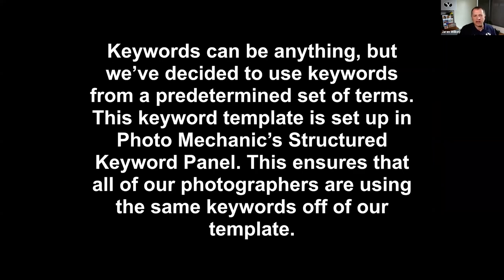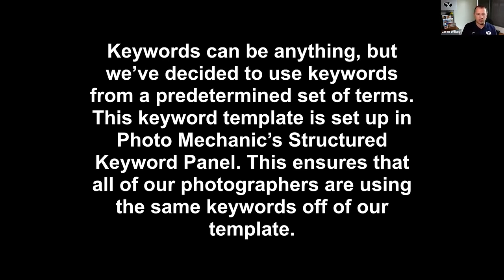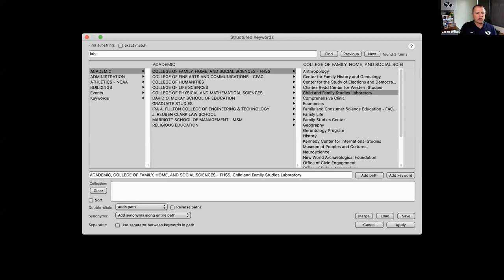Next comes keywording. Keywords can be anything, but we use keywords from a predetermined set of terms. We have two staff photographers and six student photographers — if we were all just coming up with our own keywords, they would never match up and it'd be chaotic. I got help from Ken Bennett at Wake Forest; he gave me his structured keyword panel and taught me how to use it. We've been using it for a couple of years and it's been a big deal. Ken has agreed to do a webcast on his structured keyword panel. Here's an example: academic, College of Family Home and Social Sciences (FHS), Kennedy Center for International Studies, China, teachers — all those keywords get added to the photos.